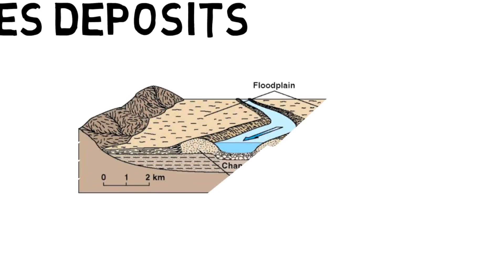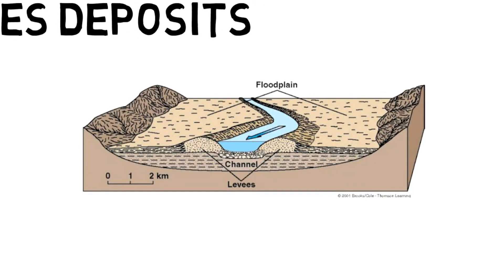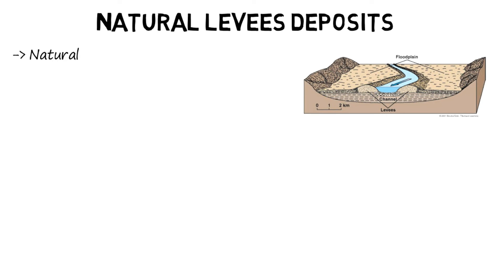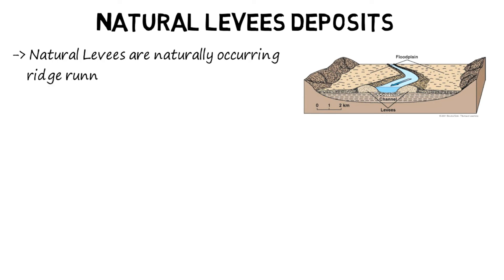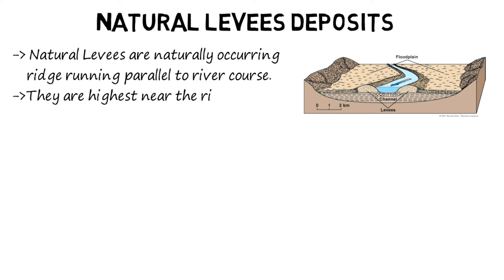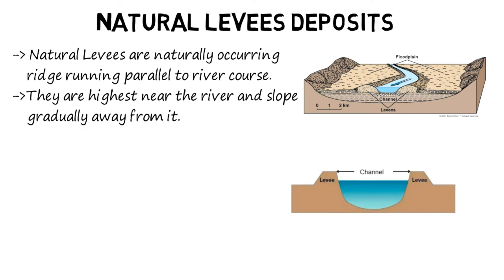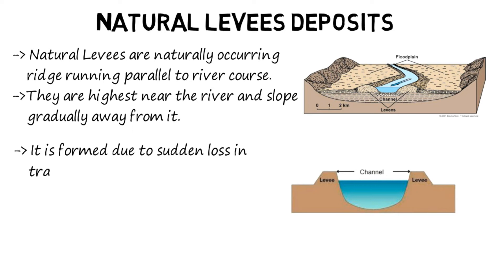Natural levees deposits. Natural levees are naturally occurring ridges running parallel to a river course. They are highest near the river and slope gradually away from it. Natural levees are formed due to sudden loss in transporting power when a river floods its banks.